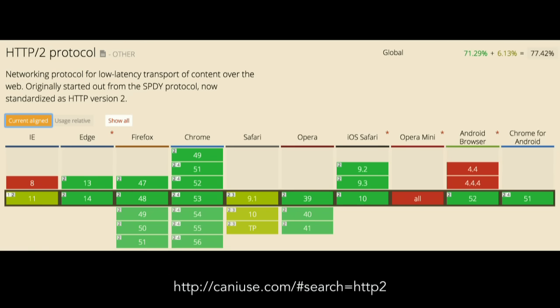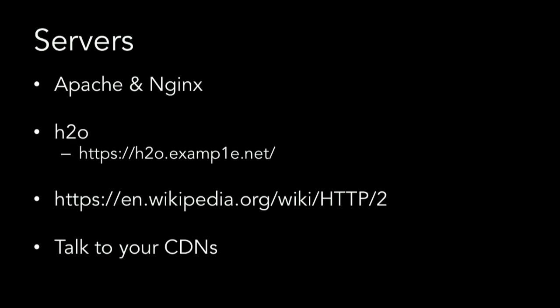Every browser pretty much supports H2 now, and all the servers are starting to support it as well. There are modules for Apache and Nginx. If you've never heard of a server called H2O, I highly recommend you check it out — it's an amazing server that supports both H1 and H2, and we use it at Fastly. There's a list of these servers on Wikipedia. If you're using CDNs, it's your CDN that's going to be terminating those connections, so talk to them if you want to partake in the H2 magic.